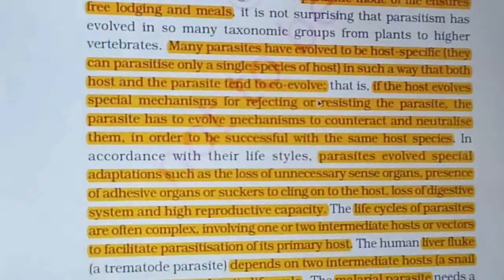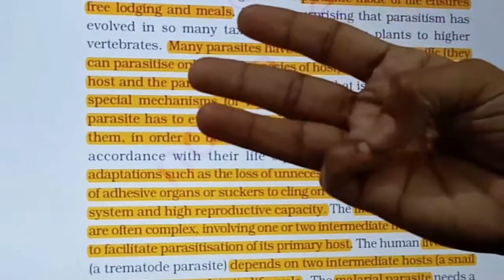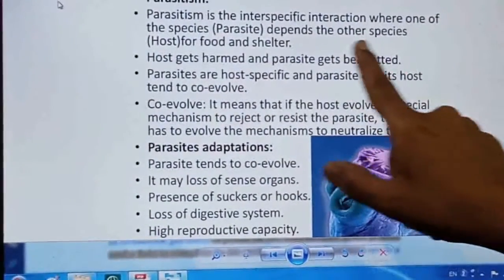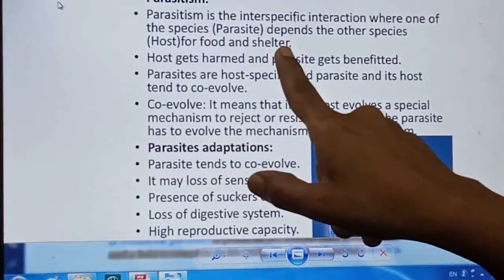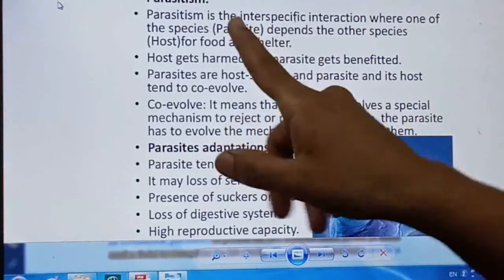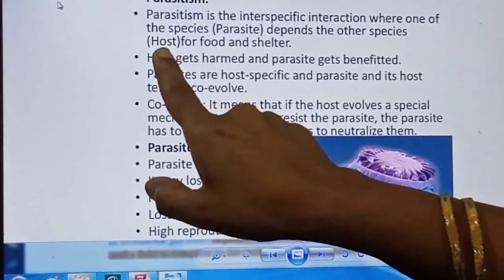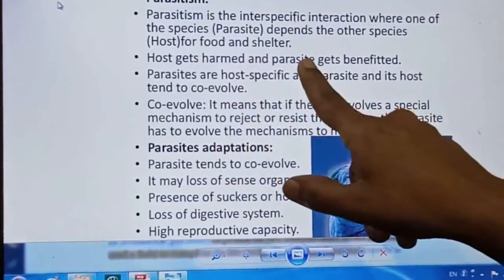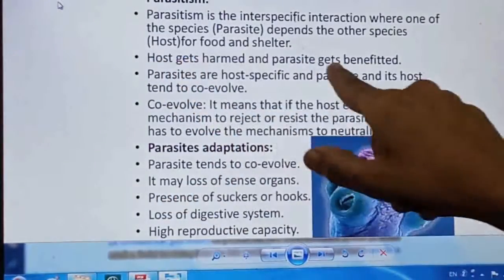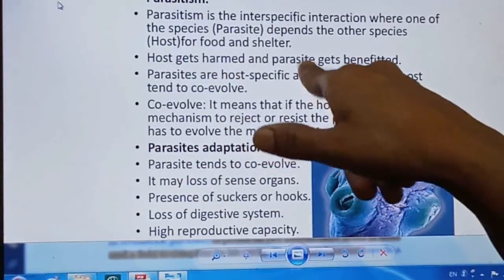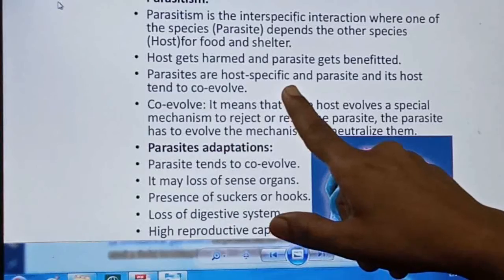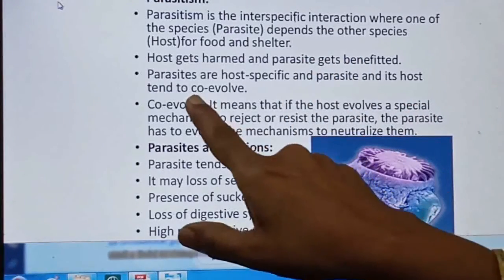The third type of interaction is parasitism. In parasitism, one species — the parasite — depends on another species — the host — for food and shelter. The parasite is benefited (shown as +) while the host is harmed (shown as −). In this interaction, the parasite and host undergo co-evolution together.